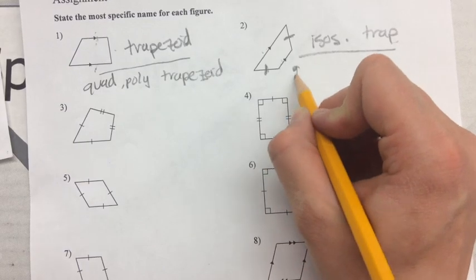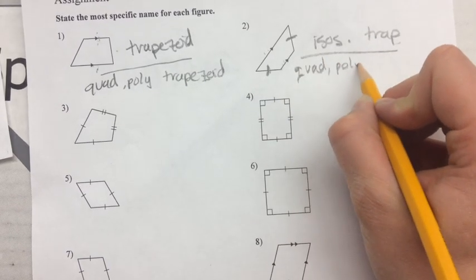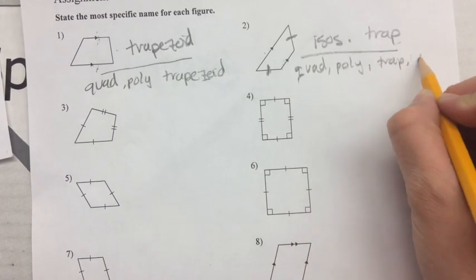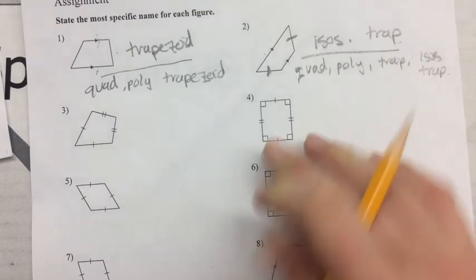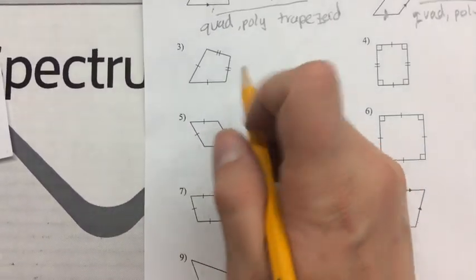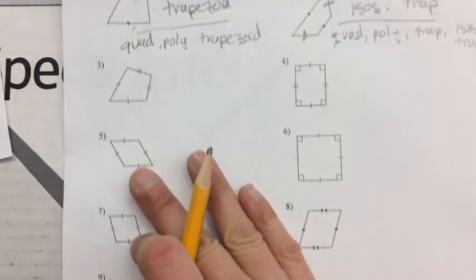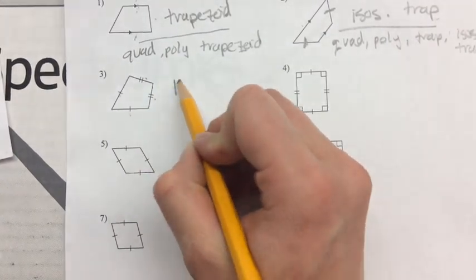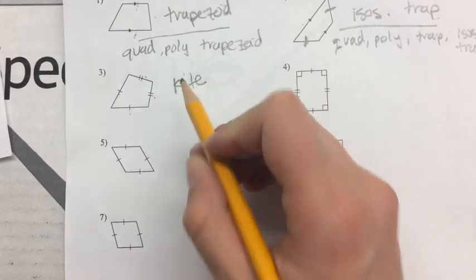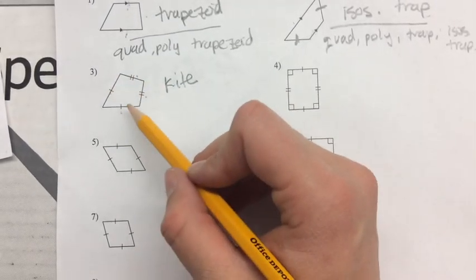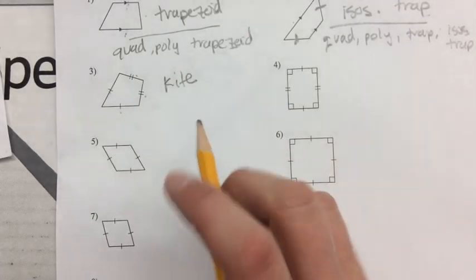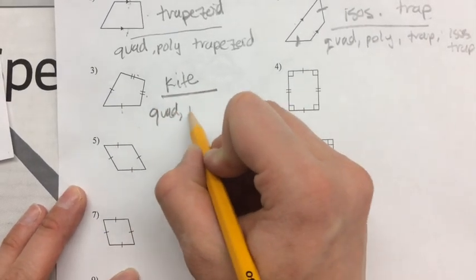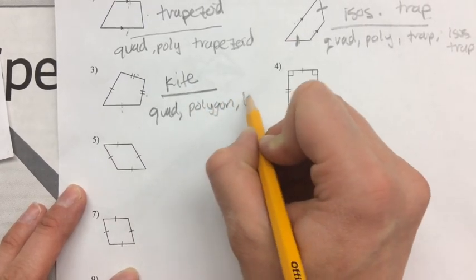If naming all names for the isosceles trapezoid, you would say quadrilateral, polygon, trapezoid, and isosceles trapezoid. The next shape has two pairs of consecutive congruent sides, which gives us a kite. There are no parallel lines, so it can't be a trapezoid or a parallelogram. If naming all, it would be quadrilateral, polygon, and kite.